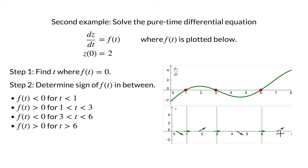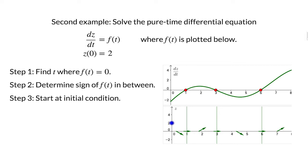The arrows we drew will guide our sketch of the solution. Before we start drawing, we have to determine where to begin. Hence for step 3, we look up the initial condition and discover that we should start at 2.